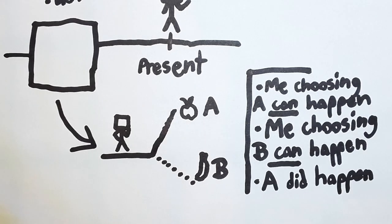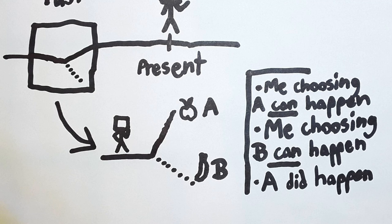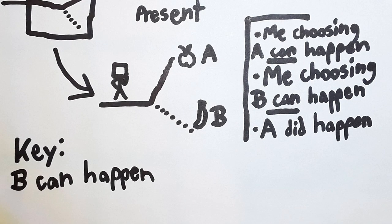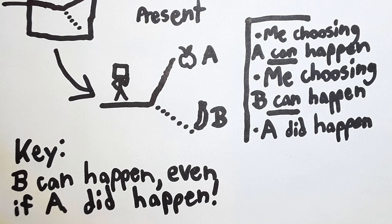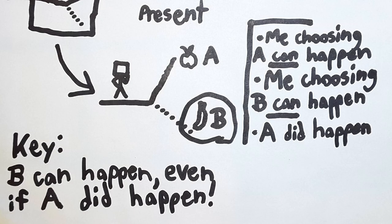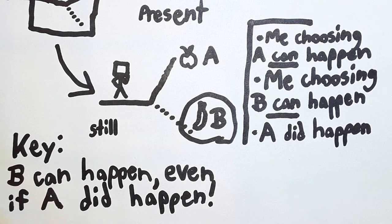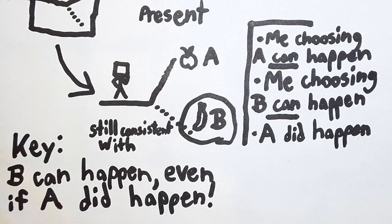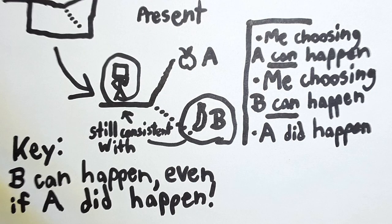Now, what happened yesterday is that I actually did choose A. Is that a problem? Nope. Everything makes sense so far. But there's a key point here. The fact that I could have chosen B is still true, even though I actually did choose A. This is because the idea of me choosing B would still be consistent with everything that was in the past up to that point, even if I do end up choosing A. So, I had the ability to do either, so I had free will.